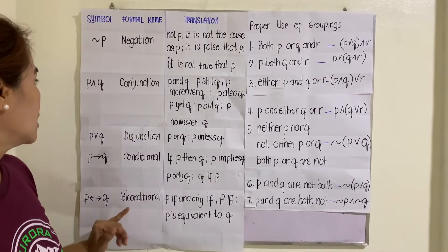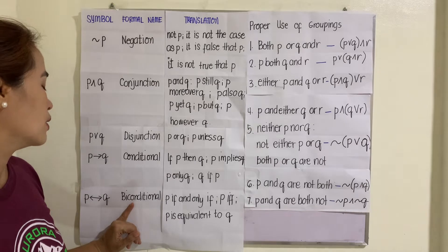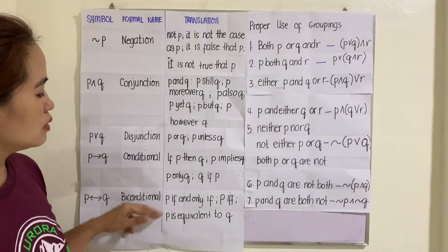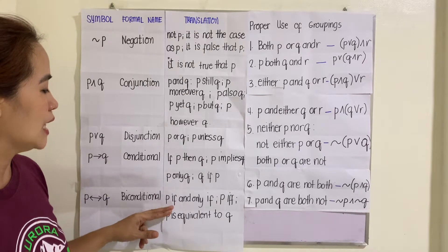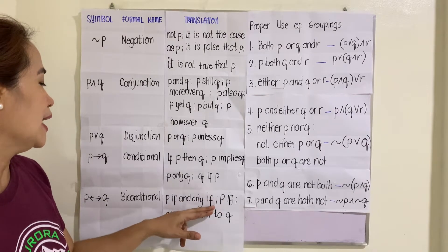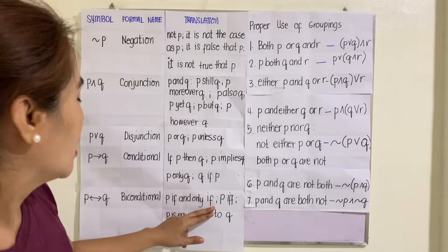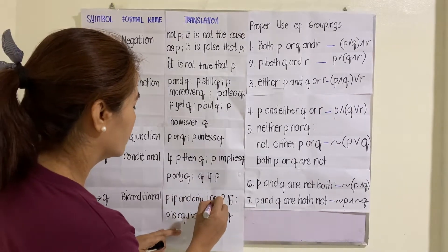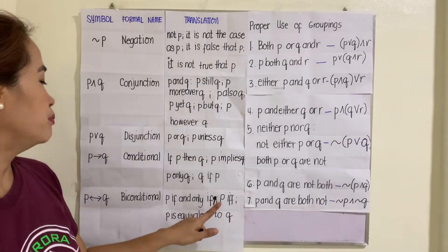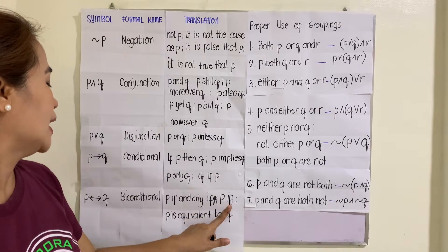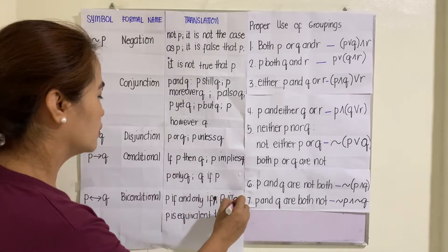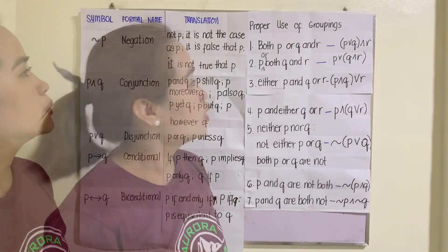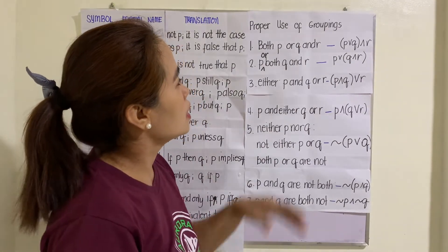For the fifth one, we have the biconditional. This is the symbol. It can be translated as 'P if and only if Q' or 'P is equivalent to Q.'